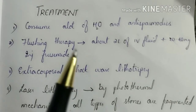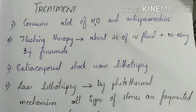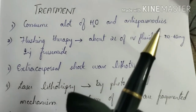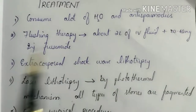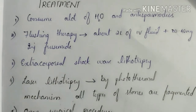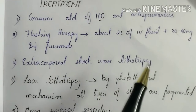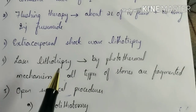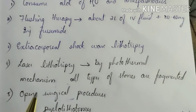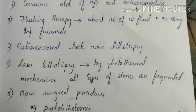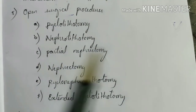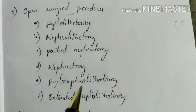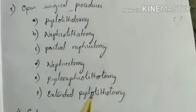Coming to the treatment: patients with urinary calculi are asked to consume a lot of water. Anti-spasmodics are given. Flushing therapy is done — about 2 liters of IV fluid with 20–40 mg of injection frusemide is given. Extracorporeal shockwave lithotripsy is performed. Laser lithotripsy is done, in which by a photothermal mechanism all types of stones are fragmented. Open surgical procedures include pyelolithotomy, nephrolithotomy, partial nephrectomy, nephrectomy, pyelonephrolithotomy, and extended pyelolithotomy. Certain endoscopic procedures are also performed.